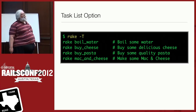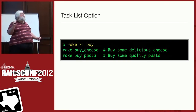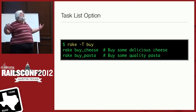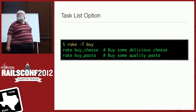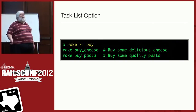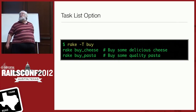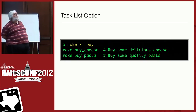In a Rails project you'll have a huge number of rake tasks. You can filter with a string on the `-T` option — `rake -T buy` will show only tasks with "buy" in the name, giving you rake_buy_cheese and rake_buy_pasta. This is really handy — in Rails I often do `rake -T db:` to get all the db commands: db:migrate, db:rollback, db:test:prepare. Note: it matches on the task name, not the description.